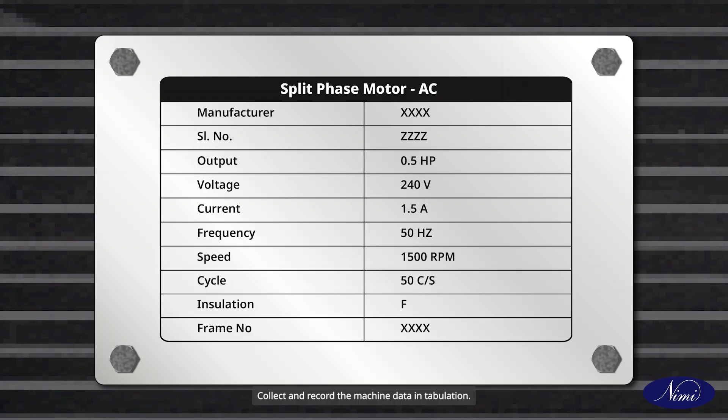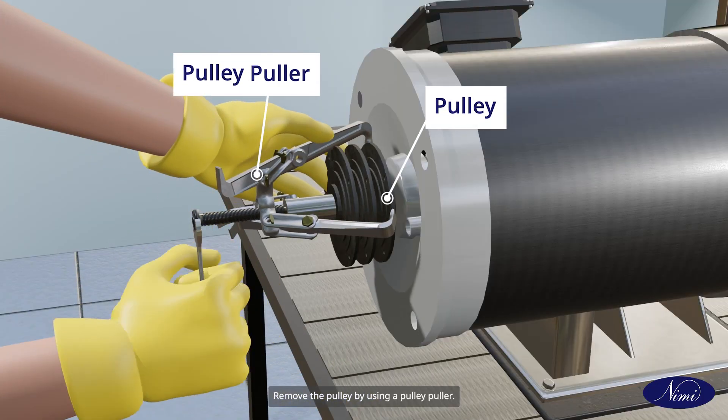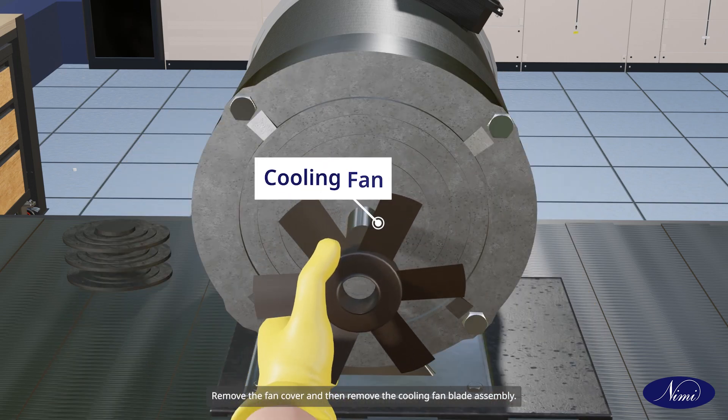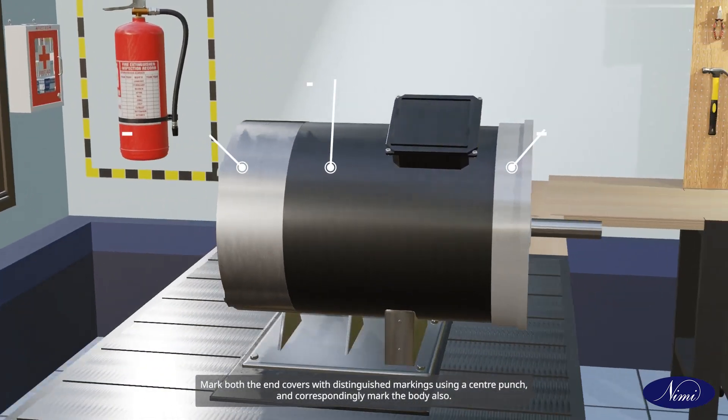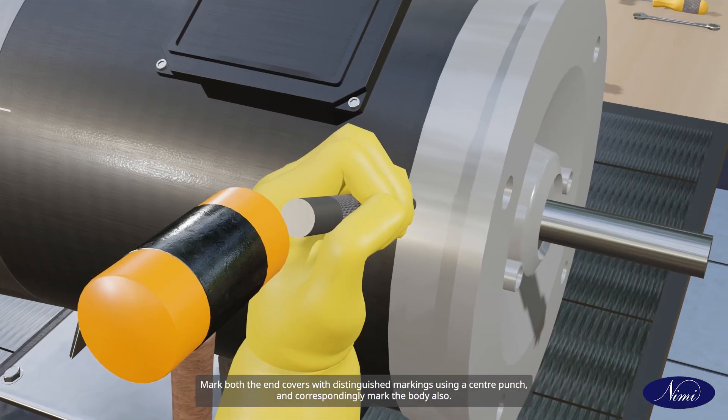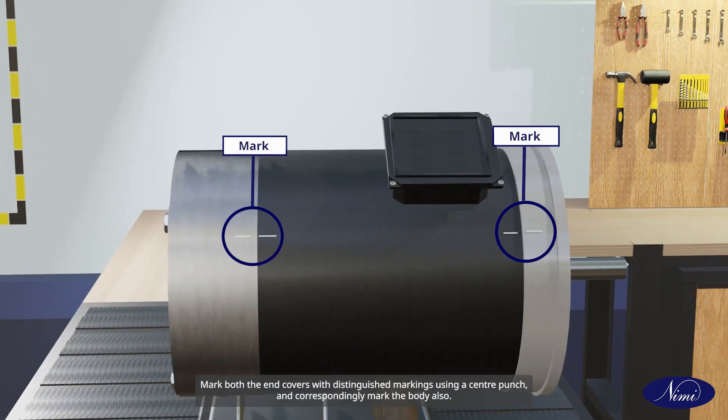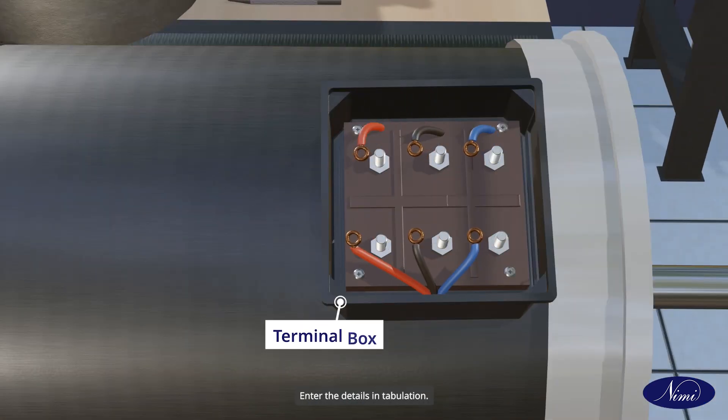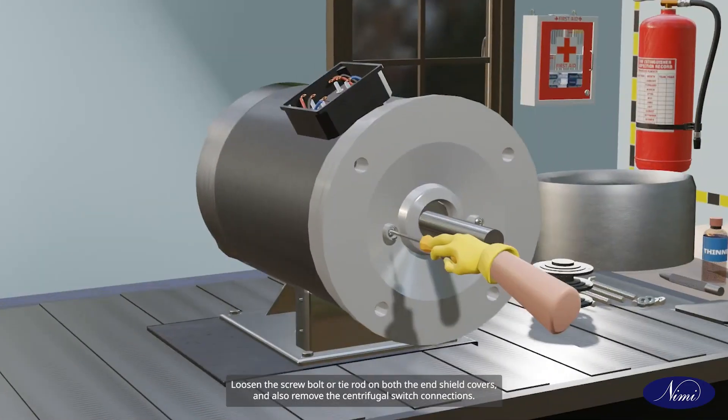Remove the pulley by using a pulley puller, remove the fan cover and then remove the cooling fan blade assembly. Mark both the end covers with distinguished markings using a center punch and correspondingly mark the body also. Mark and remove the connection leads from the terminal box and enter the details in tabulation.